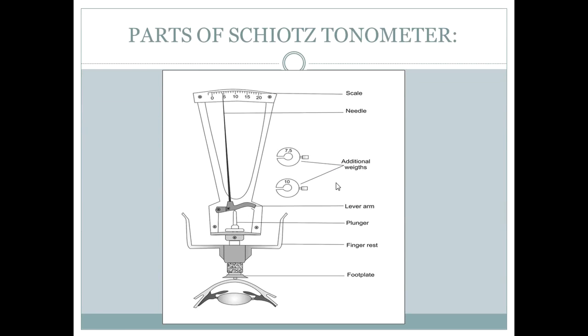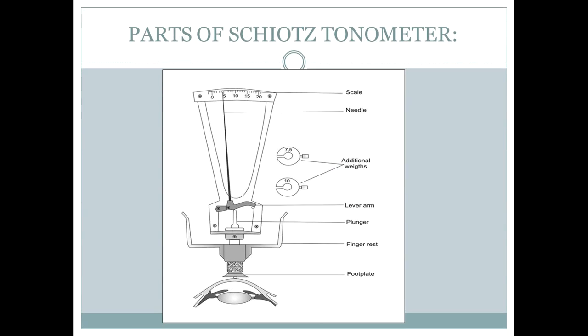Now let's go to the parts of Schiotz tonometer. Here you can see the scale and the needle which will be pointing towards the reading. There are additional weights: 7.5 gram and 10 gram. Initially, a 5.5 gram weight is placed. If your scale reading shows 4 or less than 4, you have to add the 7.5 gram additional weight to the plunger.